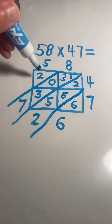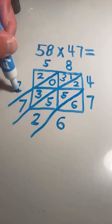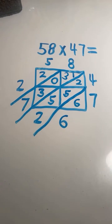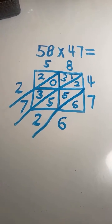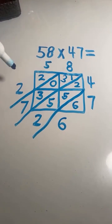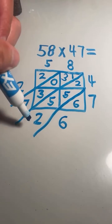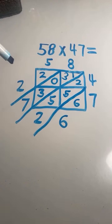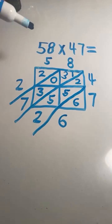In the thousands place, the only number we have is a 2. We're going to read the number from left to right: we have a 2 in the thousands place, a 7 in the hundreds place, a 2 in the tens place, and a 6 in the ones place. So our answer is 2726.